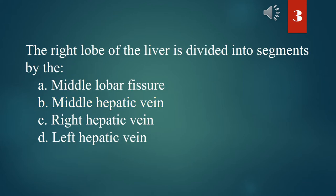The right lobe of the liver is divided into segments by the: A. Middle lobar fissure. B. Middle hepatic vein. C. Right hepatic vein. D. Left hepatic vein. The answer is C. Right hepatic vein.